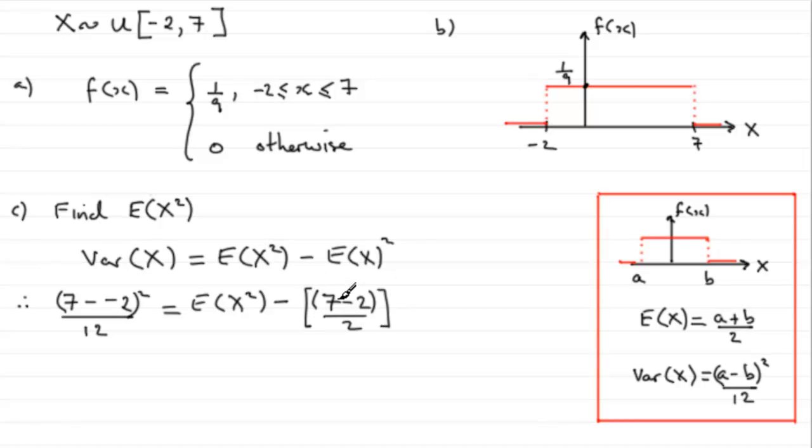So the mean is in fact 5 over 2, 2 and a half. So if you rearrange this for E of X squared, you're going to get this term plus this term. And if you work that out, you end up with...